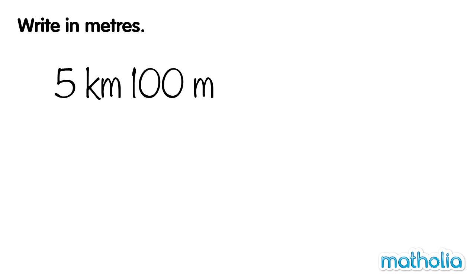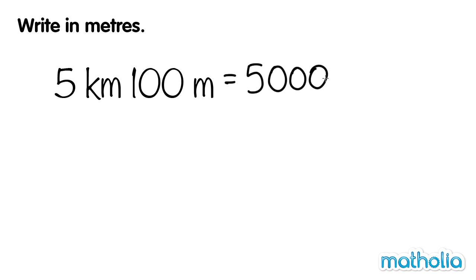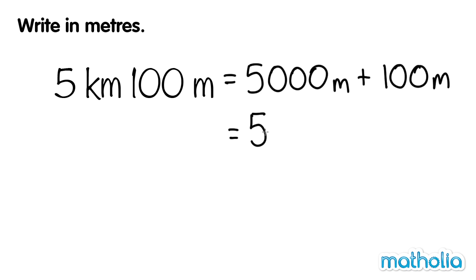Write in metres. Let's write 5 kilometres 100 metres in metres. 5 kilometres is equal to 5000 metres. So, we can write 5 kilometres 100 metres is equal to 5000 metres plus 100 metres. 5000 plus 100 equals 5100. So, 5 kilometres 100 metres equals 5100 metres.